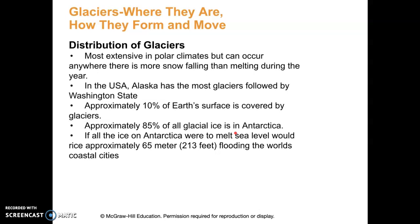Distribution of glaciers: obviously the closer to the poles we get, the more commonly they occur, but they can occur anywhere. In the U.S., Alaska has the most glaciers, and then Washington State comes next — places like Mount Rainier have a lot of glaciers. Approximately 10% of the Earth's surface is covered by glaciers, and 85% of all glacier ice is in Antarctica. If all of that ice were to melt, sea level would rise about 213 feet, flooding a lot of coastal cities.